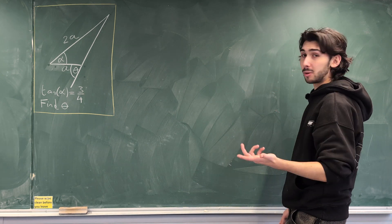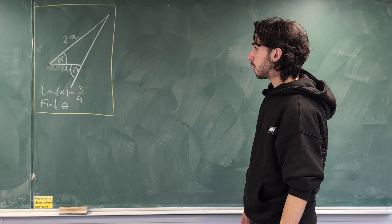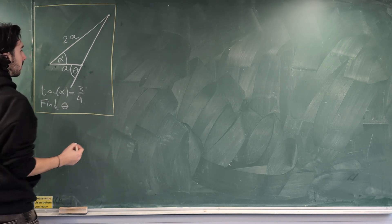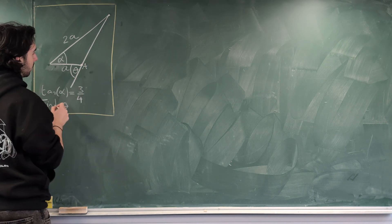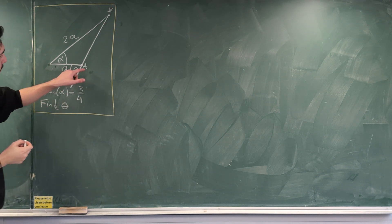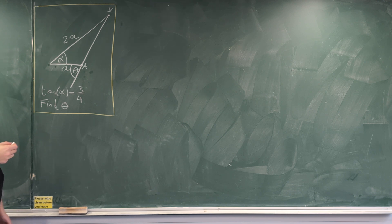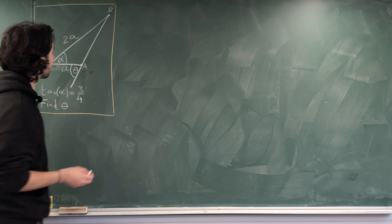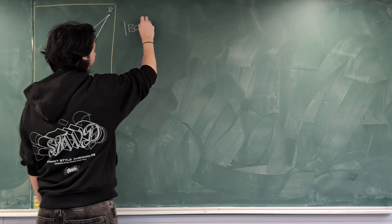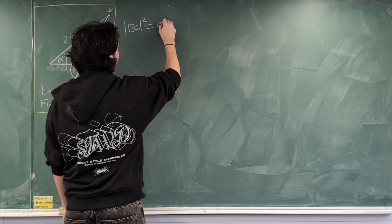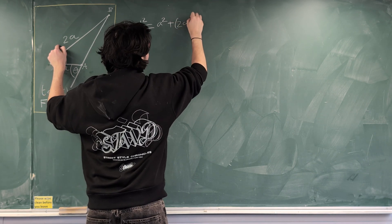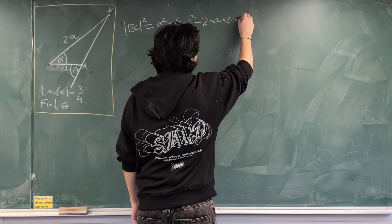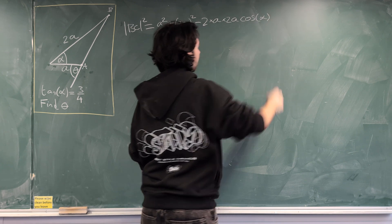And if not, let's do it together right now. The first thing we should do is find the length from point A to point B. We can use the cosine rule, because we get given an angle, a length, and another length. So BC² = a² + (2a)² − 2 × a × 2a × cos alpha. That's the cosine rule.